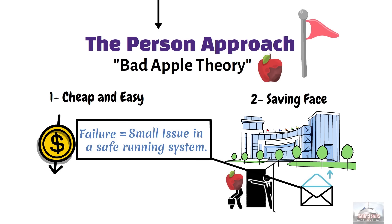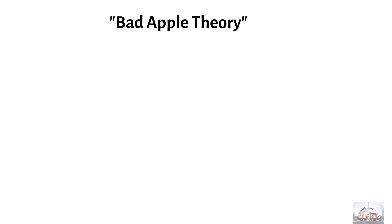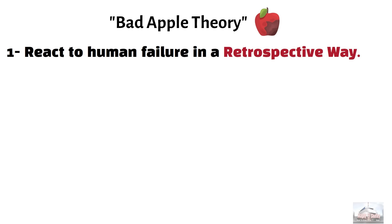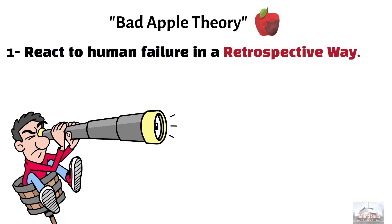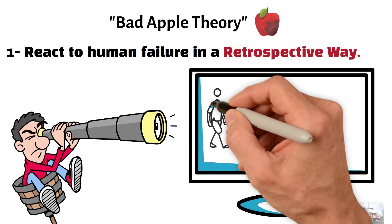And here we would like to mention two points which are related to the first approach, the bad apple theory. The first is that we usually react to human failure in a retrospective way. We react to human failure retrospectively, analyzing events after they happen.